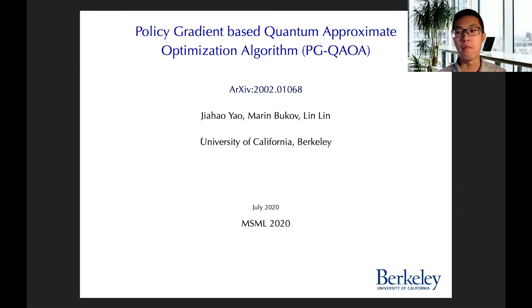The key motivation behind our paper is that current quantum techniques encounter three big challenges. The quantum state is not observable, getting the derivatives can be expensive, and measurement can be sensitive to various sorts of noise. So we introduce PGQAOA, an optimization algorithm for variational quantum circuits that is both noise-robust and gradient-free. You can find the paper through this link. This is a joint work with Maureen Booker and my advisor, Ling Ling, from UC Berkeley.